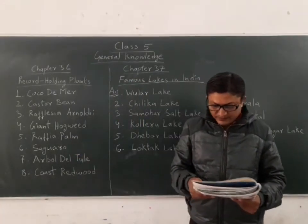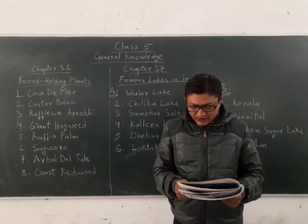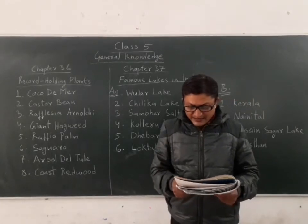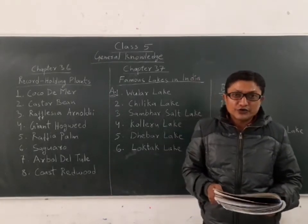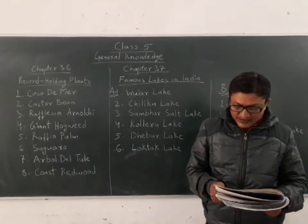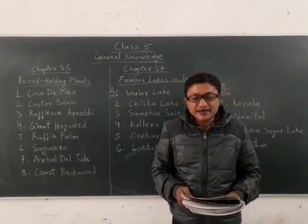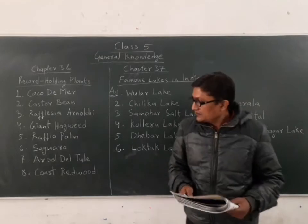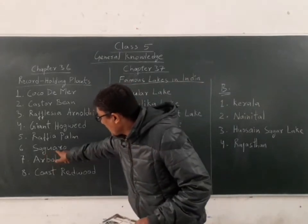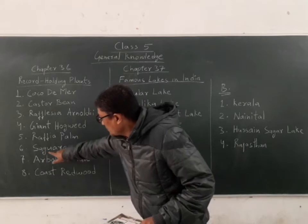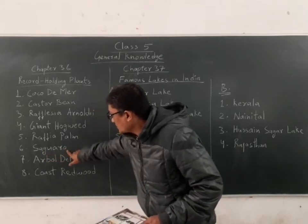Sixth: it is the tallest cactus. Some of these cacti have reached a height of 23 meters, which is taller than a 7-storey building. The cactus name is Saguaro — spelled S-A-G-U-A-R-O.